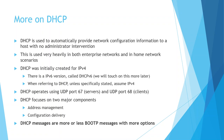DHCP was initially created for IPv4. There is an IPv6 version called DHCPv6, which we'll touch on, but it won't be as heavily used. Moving forward in this lecture, unless I specifically say DHCPv6, assume I mean IPv4. DHCP operates on UDP port 67 for servers and UDP port 68 for clients — these are the ports used to negotiate IP address leases.